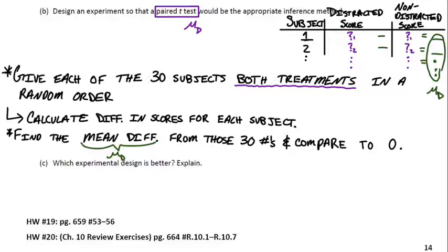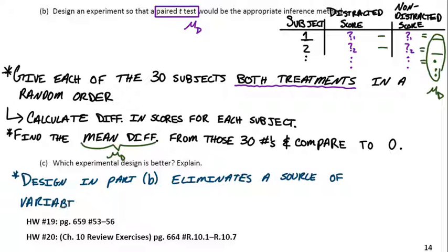So the last part here asks, which of these two designs is better and why? Well, part B is actually a little bit better because it eliminates a possible source of variability. And the variability comes from random assignment.